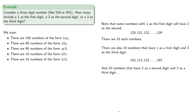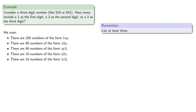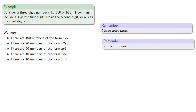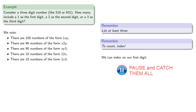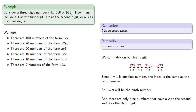In combinatorial problems it's useful to list at least three. To count, we index — here on the first digit. Since i equals 1 is our first number, the index equals the term number, so i equals 9 is the 9th number. So there are only 9 numbers that have 2 as the second digit and 3 as the third digit.